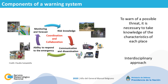A warning system is not only composed of the forecast of the natural hazard. To warn of a possible threat, it is necessary to take knowledge of the characteristics of each place, so continued monitoring and risk knowledge of the region is also needed. But a warning system is useless if it is not well understood and doesn't reach everyone, everywhere. Communication and dissemination is another important component of the system, as well as the ability to respond to the emergency.